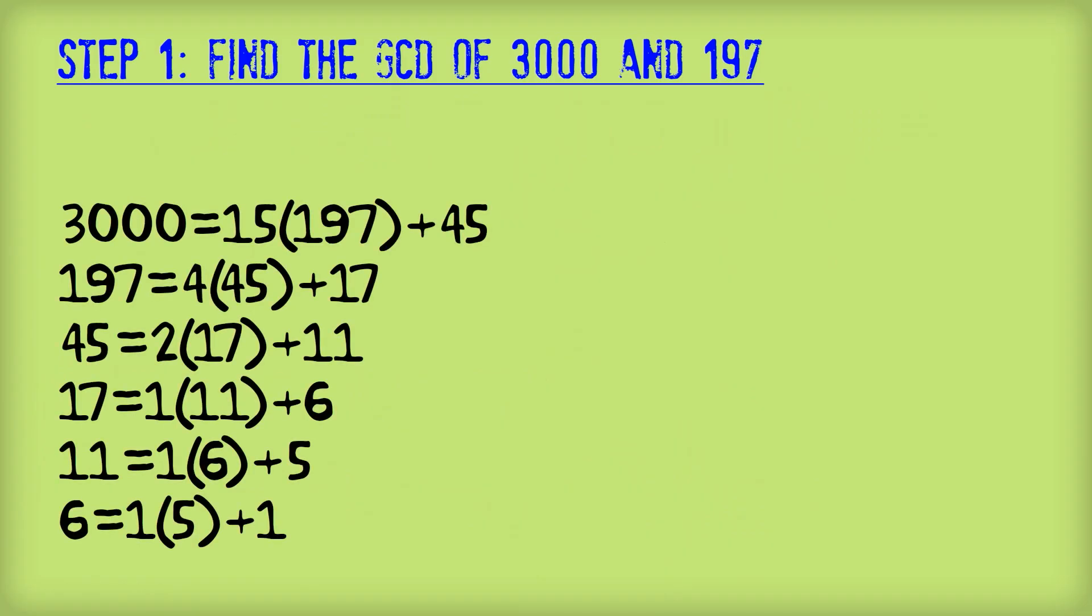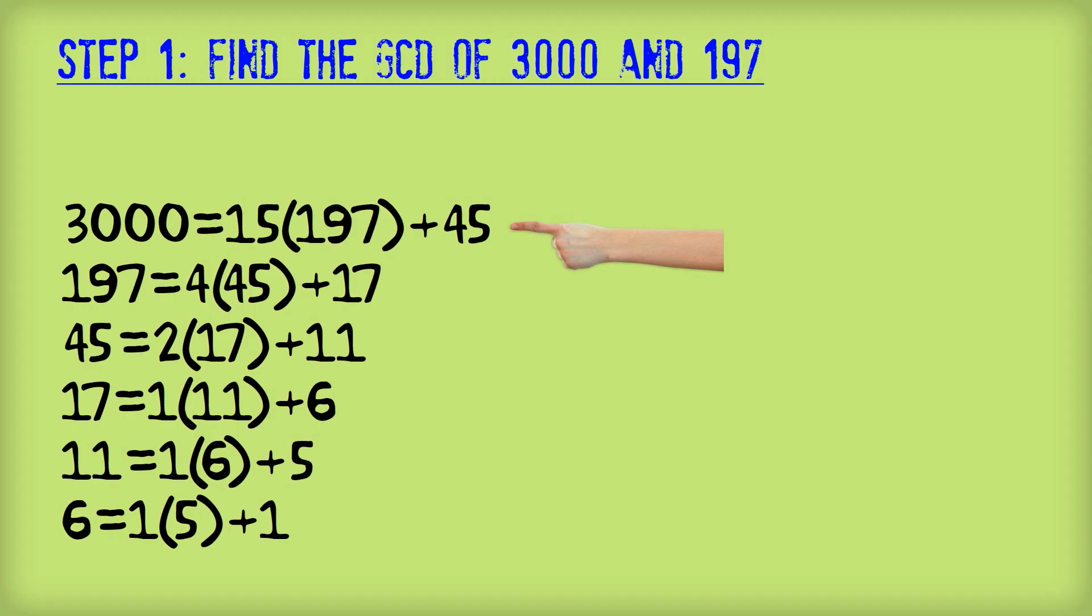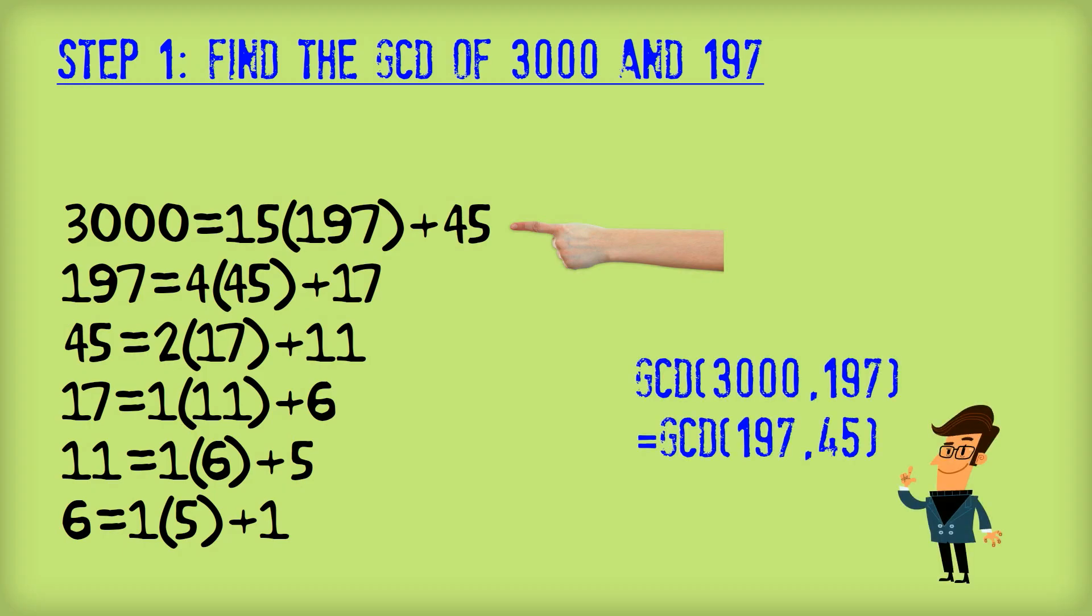So we set the problem out like this. The first line we just write out what would result if we were trying to divide 3000 by 197. So we've got here the remainder of 45. And one of the beautiful things about Euclid's algorithm is that you can show that the GCD of 3000 and of 197 is exactly the same as the GCD of 197 and 45. And the other beautiful thing about Euclid's algorithm is that we can repeat the process.